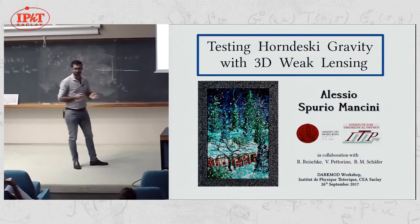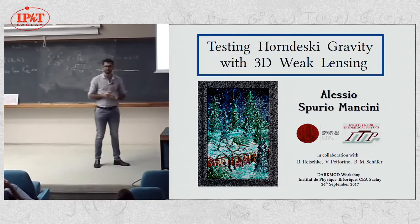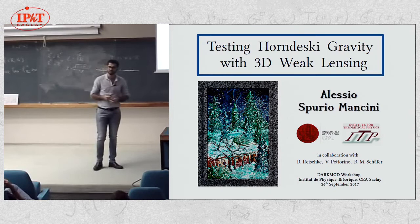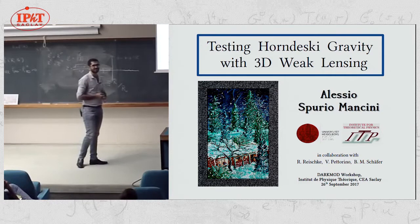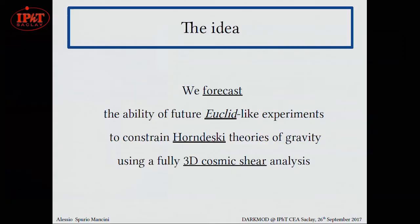This is a project about testing modified gravity theories, and it's about testing them with lensing, but I will focus specifically on Horndeski gravity and with a kind of lensing analysis which is not the standard one, and it's 3D weak lensing. But before I start, I'm sure that many of you will be wondering what this picture has to do with either 3D weak lensing or Horndeski theories, and the answer will come in a few slides.